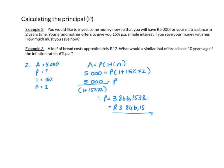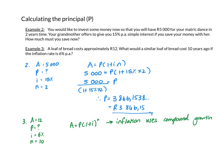Example 3: A loaf of bread costs approximately 12 rand. What would a similar loaf have cost 10 years ago if the inflation rate is 6% per annum? The past value is the principal because it has grown to become today's value. Inflation always uses compound growth, since the increase is calculated on the current value. So A = 12, i = 0.06, n = 10, and solving for P by dividing by (1.06)^10 gives approximately 6 rand and 70 cents.